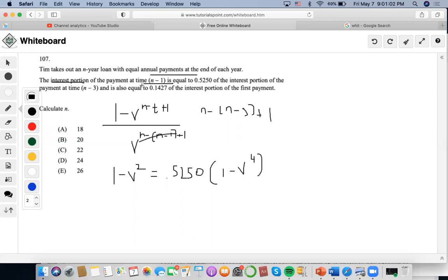Then it also says the interest portion is also equal to 0.1427 of the interest portion of the first payment. So if I were to input 1 here, it would just be 1 minus v to the n.